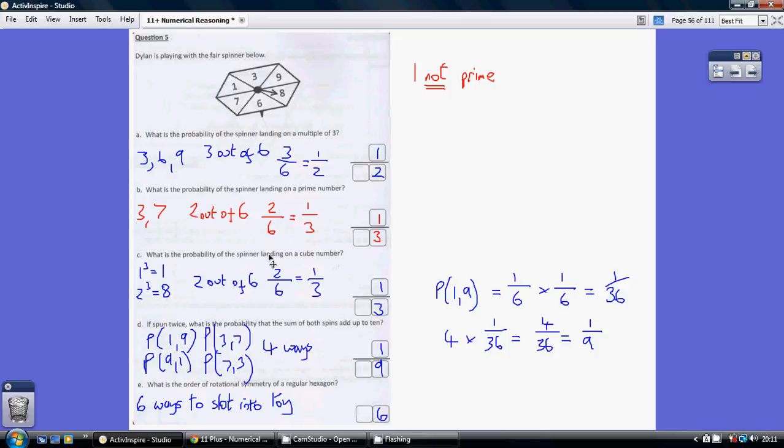What is the probability of the spinner landing on a cube number? Well a cube number is when you get having cubed another whole number. So 1 cubed is 1, 2 cubed is 8, 3 cubed would be 27, so far too big. 1, 8, 27 would all be cube numbers.